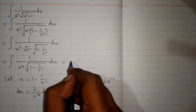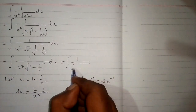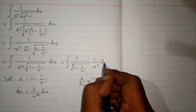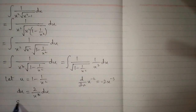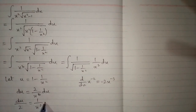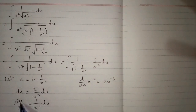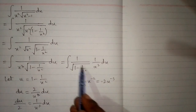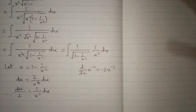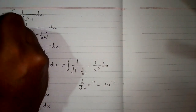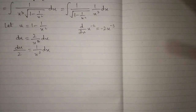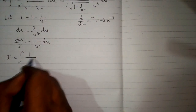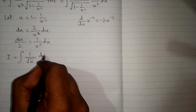The above integral can be written as the integral of 1 upon square root of 1 minus 1 upon x square, multiplied by 1 upon x cube dx. Since du upon 2 equals 1 upon x cube dx, we substitute du upon 2 in place of 1 upon x cube dx, and put u inside the square root. So the integral i becomes 1 upon square root of u times du upon 2.